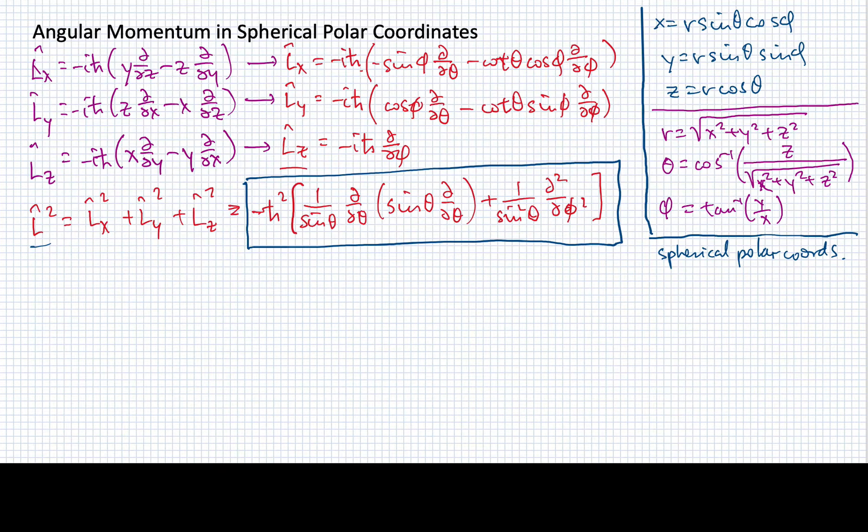So if we use this now, let me rewrite what our Hamiltonian would look like in terms of the Laplacian. We'd be minus h-bar squared over 2m times the Laplacian plus a term that I'll just call the potential energy operator.